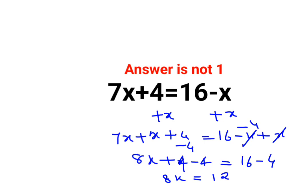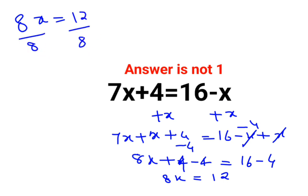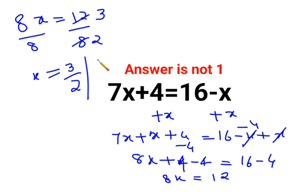We need to find the value of x, and we have 8x equals 12. To find x, we divide both sides by 8, giving us x equals 12 over 8. That simplifies to 3 over 2, or you can say the answer is 1.5. I hope this is very clear to everyone.